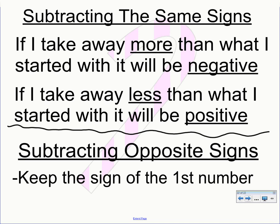When subtracting opposite signs — a negative minus a positive, or a positive minus a negative — keep the sign of the first number. That first number tells you what sign the result will have, and from there you decide whether to add or subtract the integers. We've called this Kelly's rule, because a special person with the last name Kelly discovered it. Keep the sign of the first number — that's Kelly's rule for subtracting opposite signs.